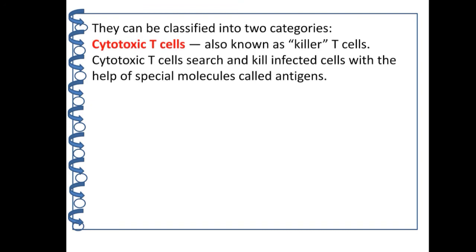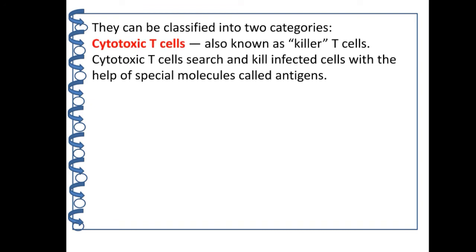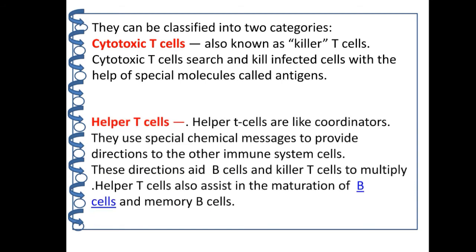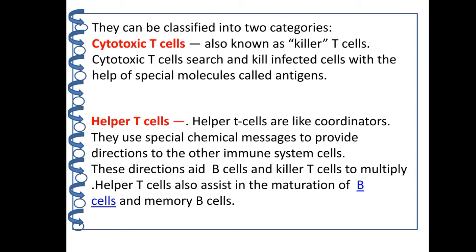T cells can be classified into two categories: cytotoxic T cells, also known as killer T cells, and helper T cells, which act like coordinators. Helper T cells use special chemical messages to provide directions to other immune system cells. Helper T cells also assist in the maturation of B cells and memory B cells.